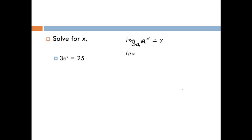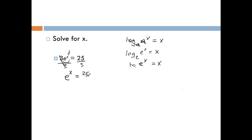The log base e of e to the x will be equal to x, and remember that the log base e is just the natural log. So if you take the natural log of e to some power, that cancels and you're just left with x. To solve the equation, we need to isolate the entire exponential term, which is e to the x power. So we divide both sides of the equation by 3, and on the left side we're just left with e to the x, and on the right side we have 25 thirds.